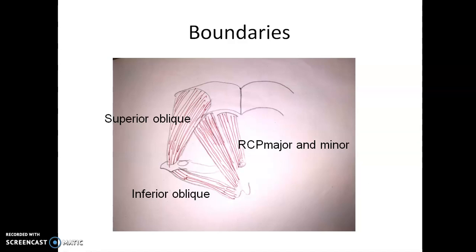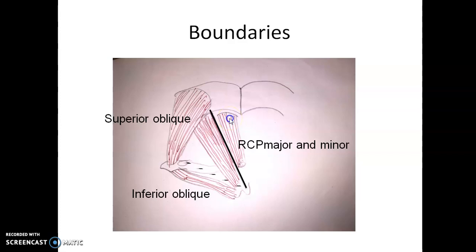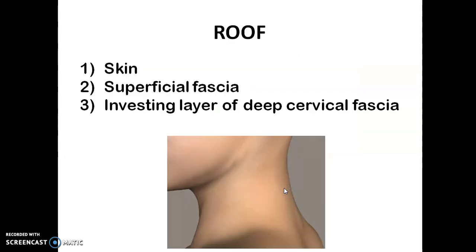Coming to the boundaries of this triangle — it is a triangular area on the posterior aspect. The medial boundary is formed by rectus capitis posterior major and rectus capitis posterior minor. The superolateral boundary is formed by the superior oblique, and the inferolateral boundary by the inferior oblique. The roof of this triangle is formed by skin, superficial fascia, and the investing layer of deep cervical fascia, like all other triangles of the neck.